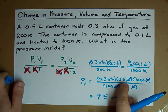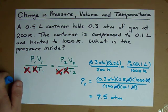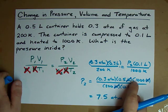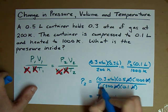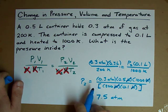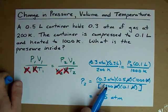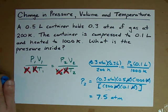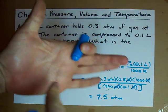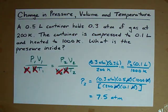You can plug 0.3 times 0.5 divided by—oh sorry, times 1,000—divided by all this on the bottom. If you're doing this in your calculator, you're going to want to put the denominator in brackets: 200 times 0.1. And when you do that on your calculator, you end up with 7.5 atmospheres.